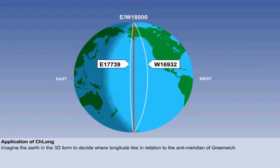Firstly, where is the west 16932 meridian? Remember to think of the earth in its three-dimensional form to decide where the westerly longitude is. From the west 16932 meridian, it is 10 degrees 28 minutes to the east-west 18000 anti-meridian of Greenwich.